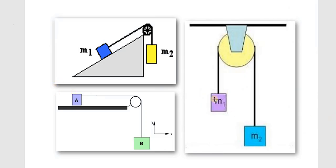We have three pulleys here: the vertical one, one in a horizontal position, one attached to the surface, and one on an inclined plane. Of course, it's not limited to these — there are also more complex pulleys — but this will just be the focus of our discussion.